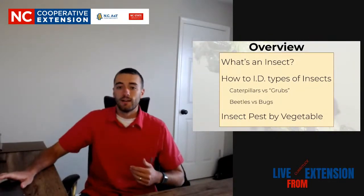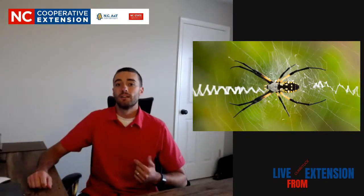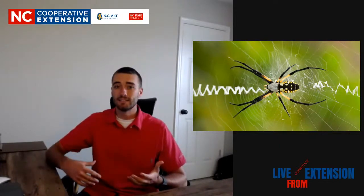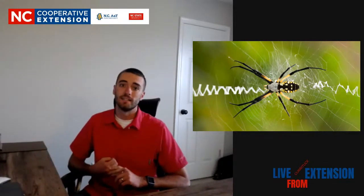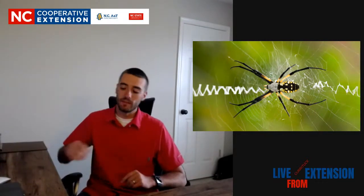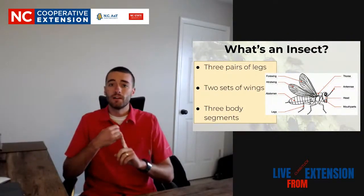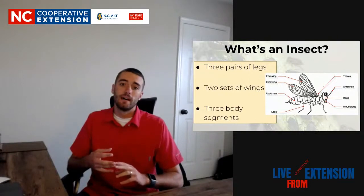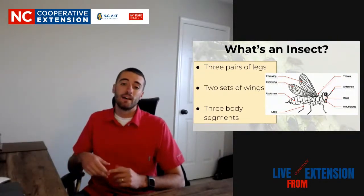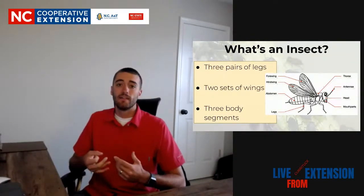So we're going to jump in to 'what is an insect.' The first image is something that looks a lot like an insect — spiders. A lot of people ask, 'is it an insect?' They have a lot of legs and crawl around like an insect. What actually makes something an insect is that they have three pairs of legs — six legs total — two sets of wings, and three body segments: a head, a thorax where their legs and wings attach, and an abdomen.